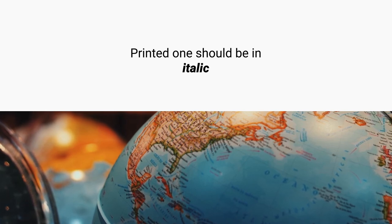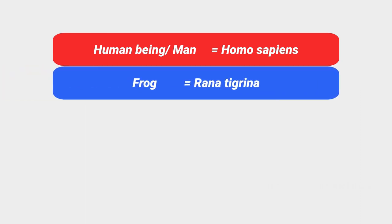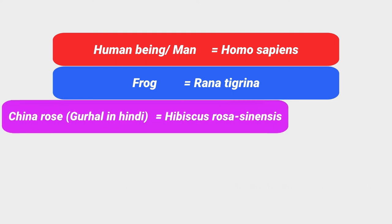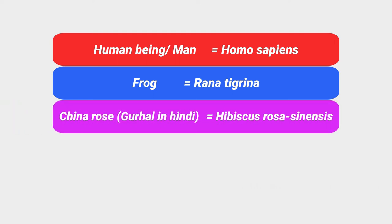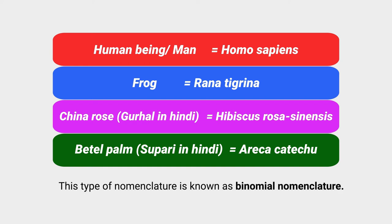Some examples: humans are Homo sapiens, frog is Rana tigrina, China rose (Gulhar in Hindi) is Hibiscus rosa-sinensis, betel palm is Areca catechu, and pea is Pisum sativum. What you need to explain to students is that it is not necessary to memorize the scientific name of every animal or plant; let them understand why this naming system exists and what the benefits are of using an international nomenclature across the world.